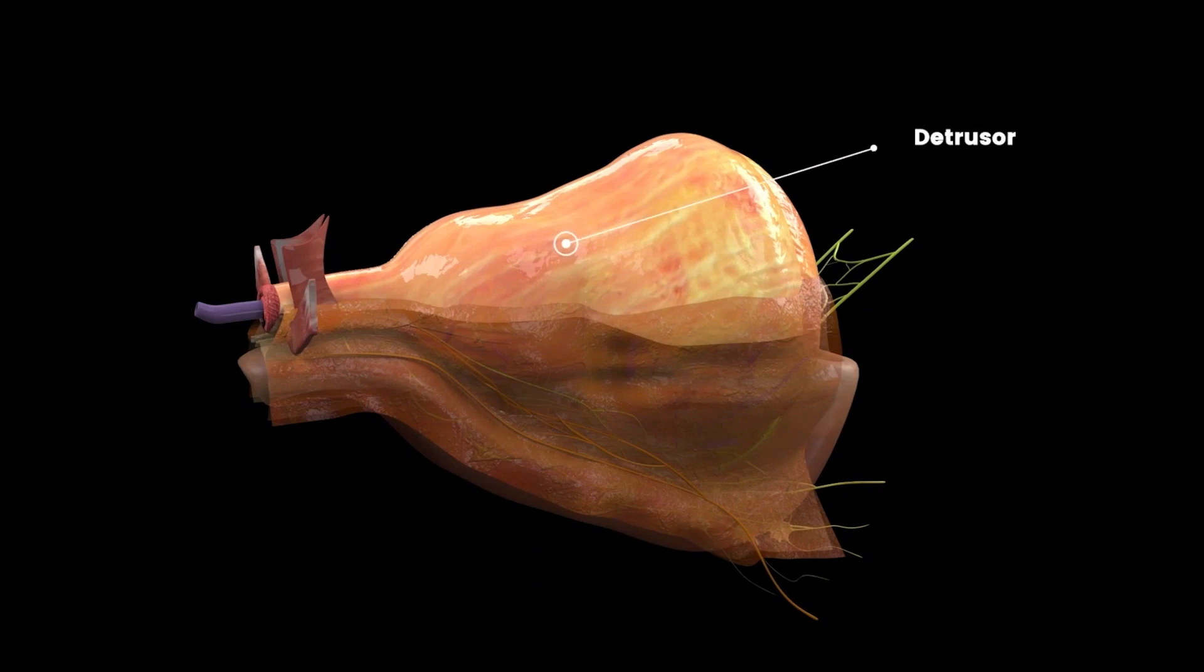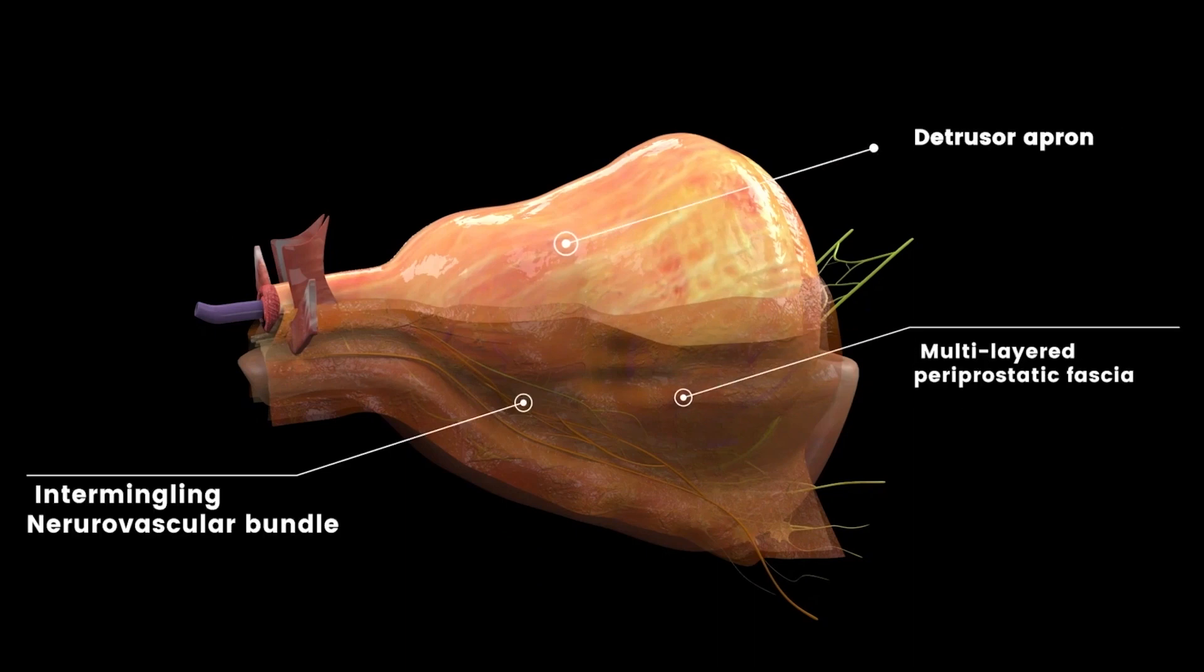The prostate is a dense fibromuscular gland situated in the true pelvis, surrounded by a compact, multilayered fascial architecture with nerves and vessels intermingling in these fascial layers.